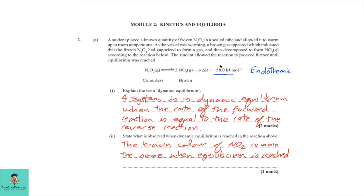Examining the equation, you'll see a positive value for the enthalpy change, which tells us this is an endothermic reaction. For an endothermic reaction, think of heat as a reactant. If it were exothermic, heat would be a product. Since this is endothermic, heat is on the reactant side.